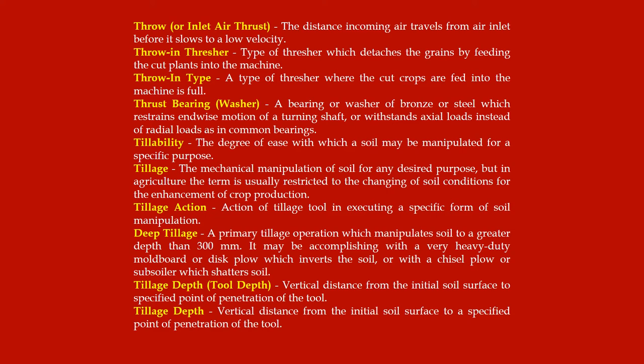Tillage: the mechanical manipulation of soil for any desired purpose; in agriculture the term is usually restricted to the changing of soil conditions for the enhancement of crop production. Tillage action: the action of a tillage tool in executing a specific form of soil manipulation. Deep tillage: a primary tillage operation which manipulates soil to a greater depth than 300 millimeters; it may be accomplished with a very heavy-duty moldboard or disc plow which inverts the soil, or with a chisel plow or subsoiler which shatters soil.